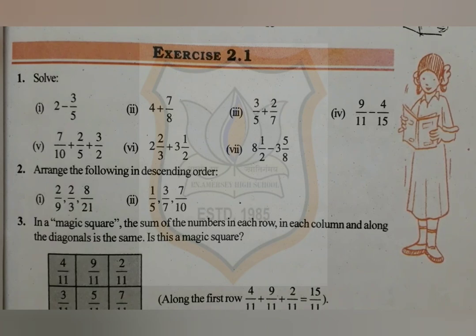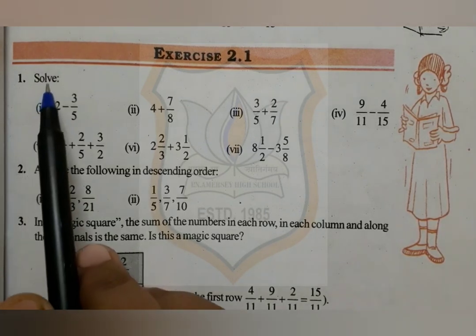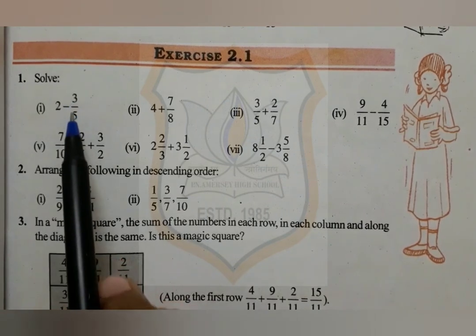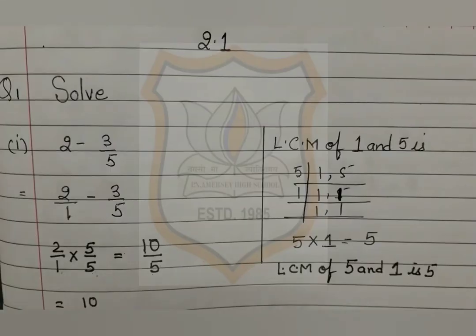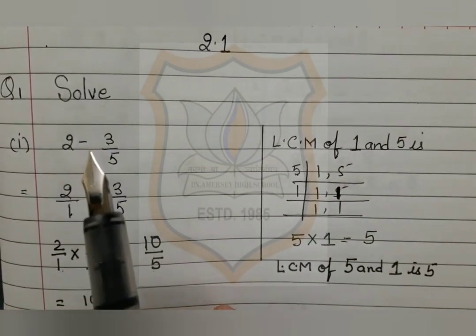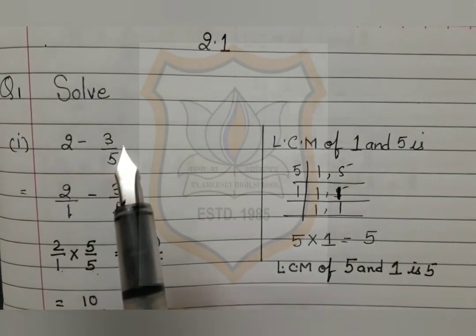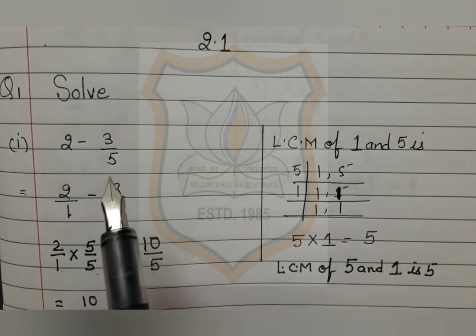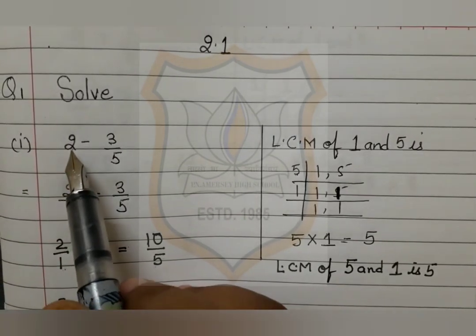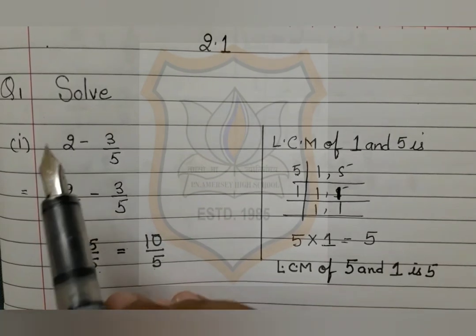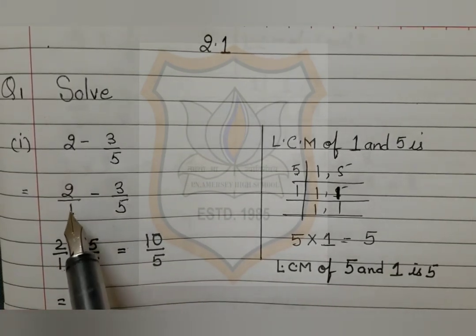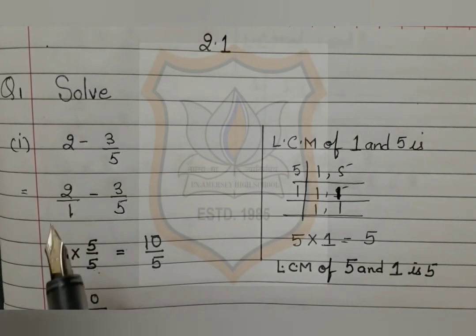The first question of exercise 2.1 is: solve. The first part is 2 minus 3 upon 5. As I mentioned in the introductory video of this chapter, if you are given a whole number in the question — here the whole number is 2 — just put 1 at its denominator place. This will simplify your calculation.